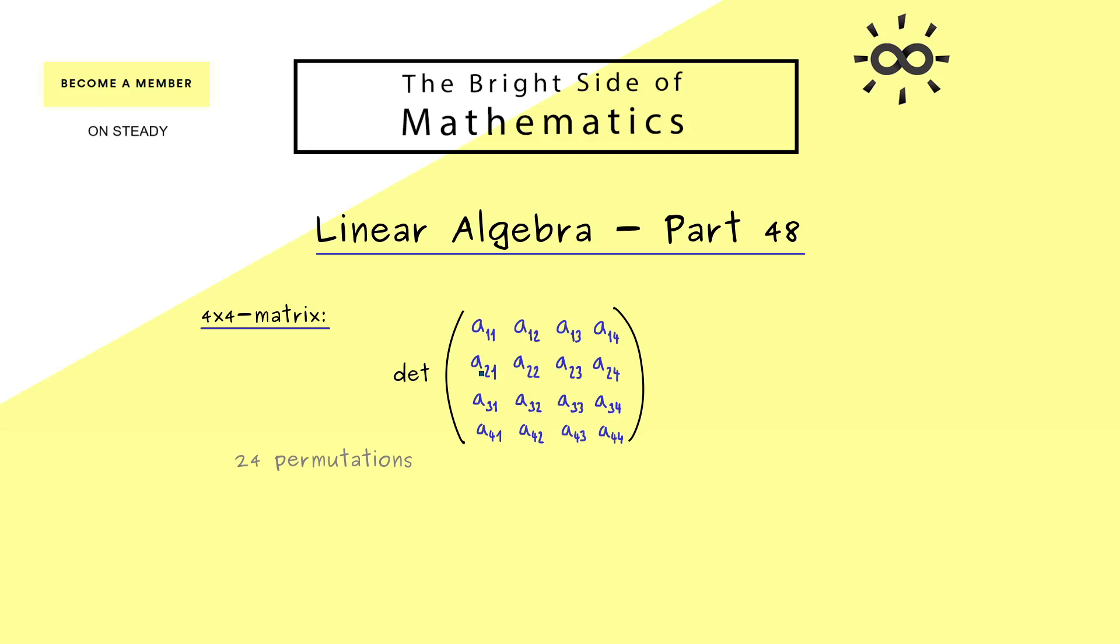However, we know that in each product all rows and columns are involved. For example, if we look at all the products that have a11 in it, we already know that this row and this column is not involved anymore. In other words, only this lower right part of the matrix is still in the game.